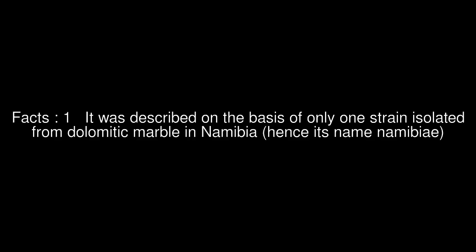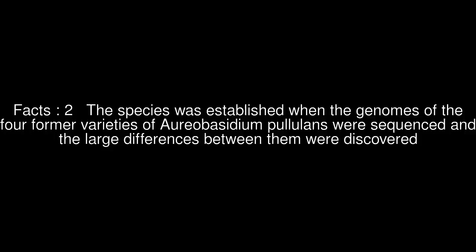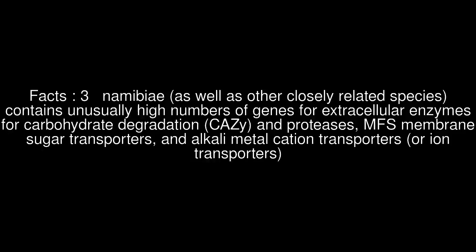It was described on the basis of only one strain isolated from dolomitic marble in Namibia, hence its name Namibii. The species was established when the genomes of the four former varieties of Aureobasidium pullulans were sequenced and the large differences between them were discovered. Namibii, as well as other closely related species,